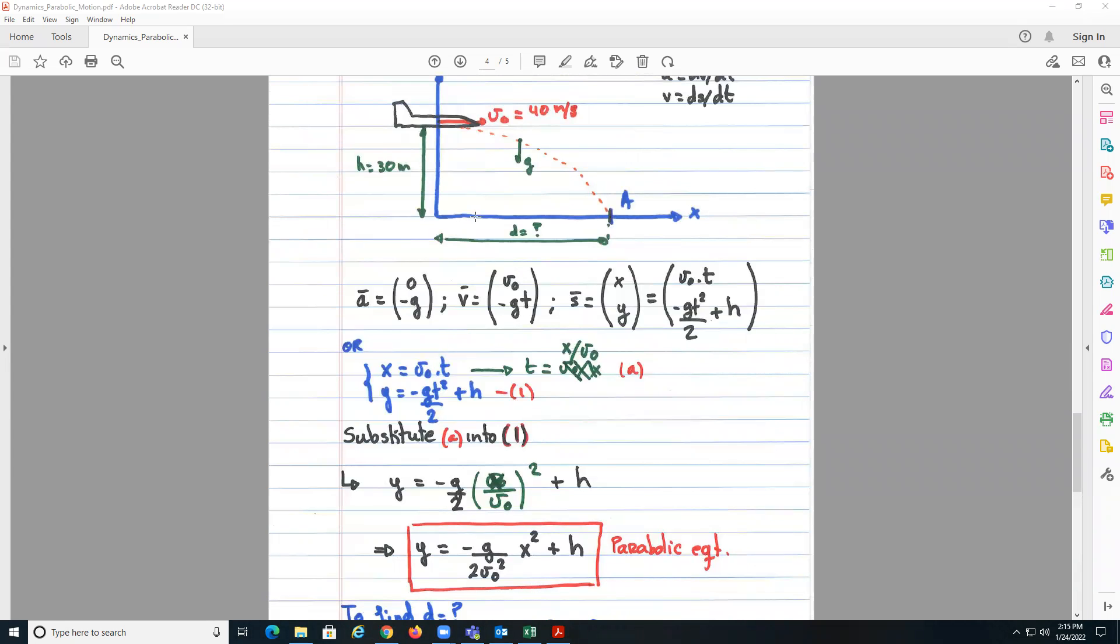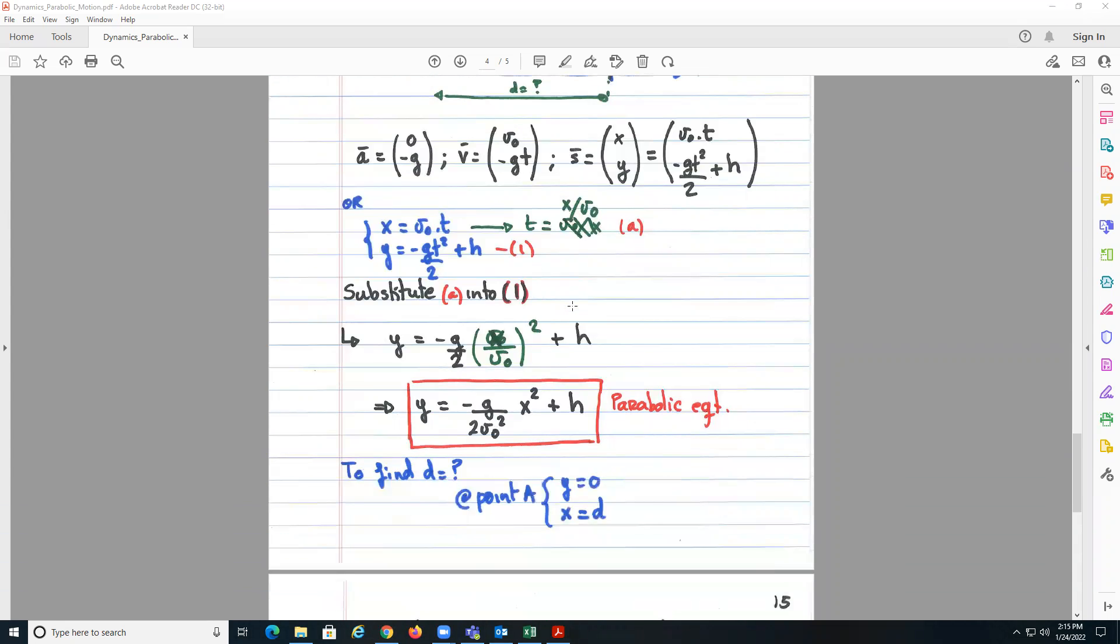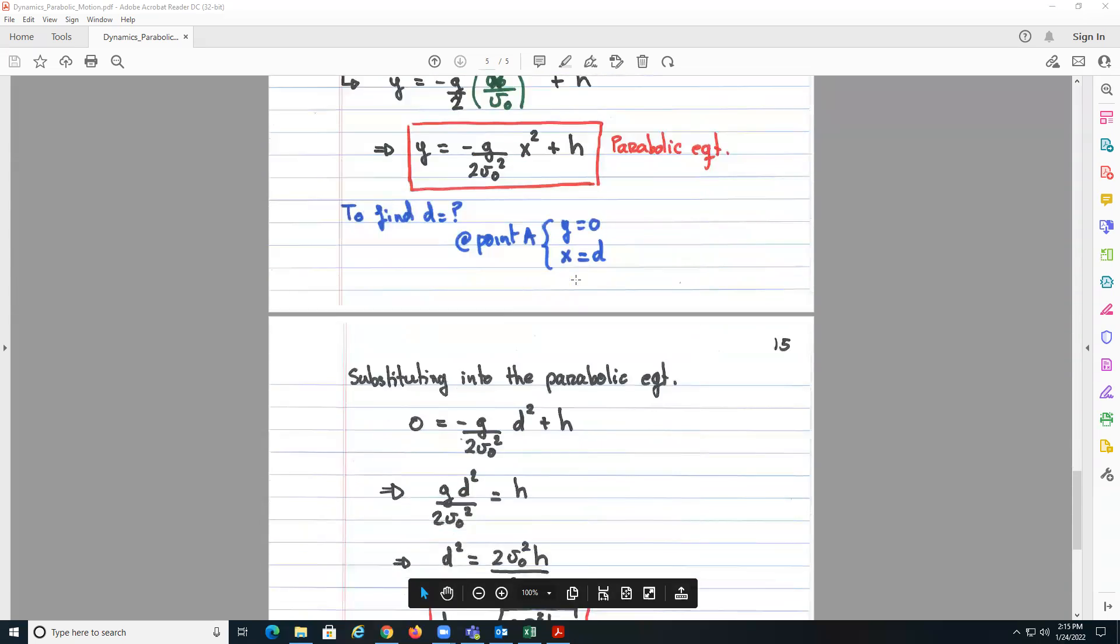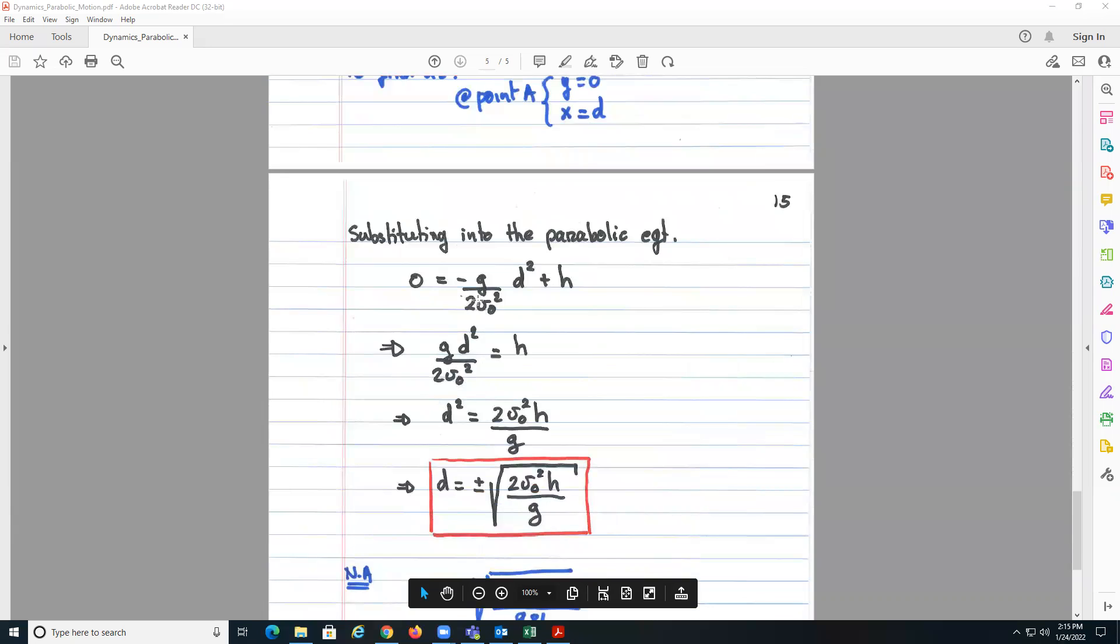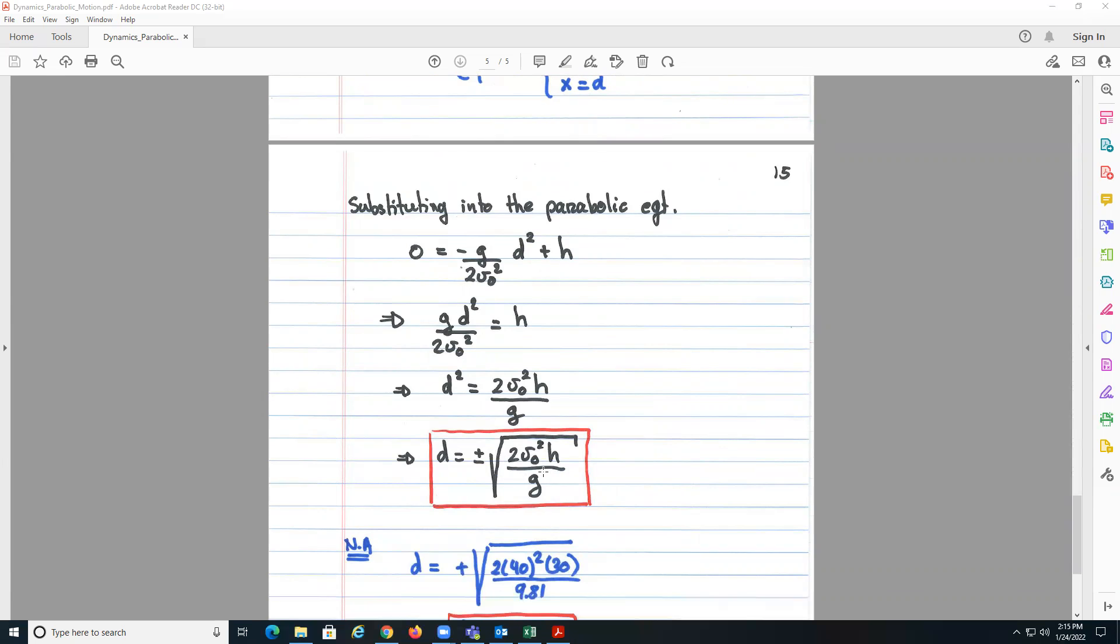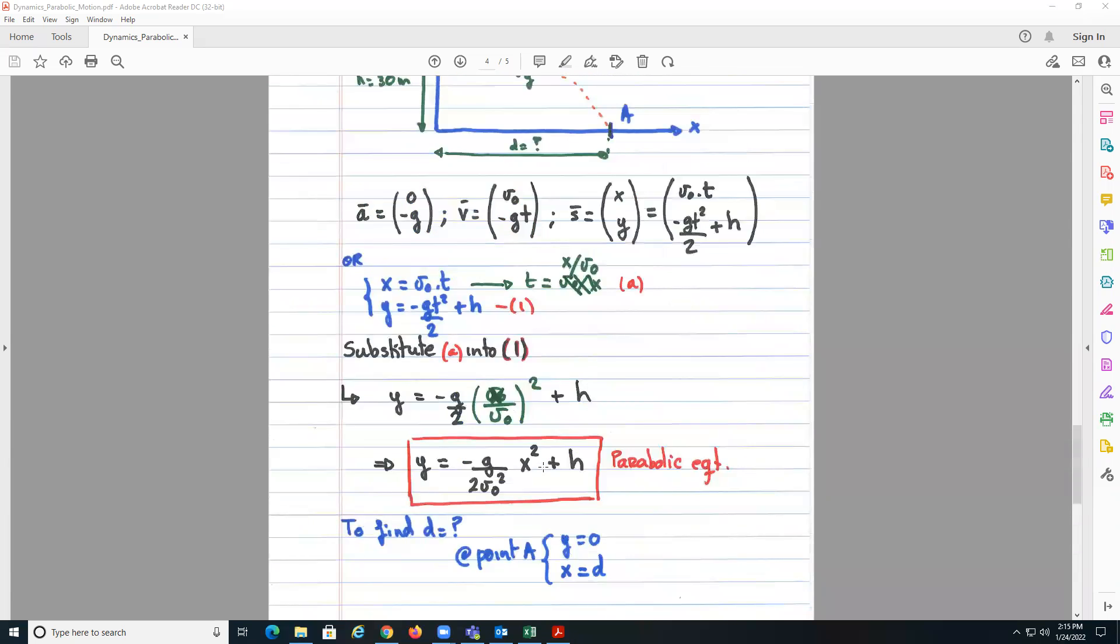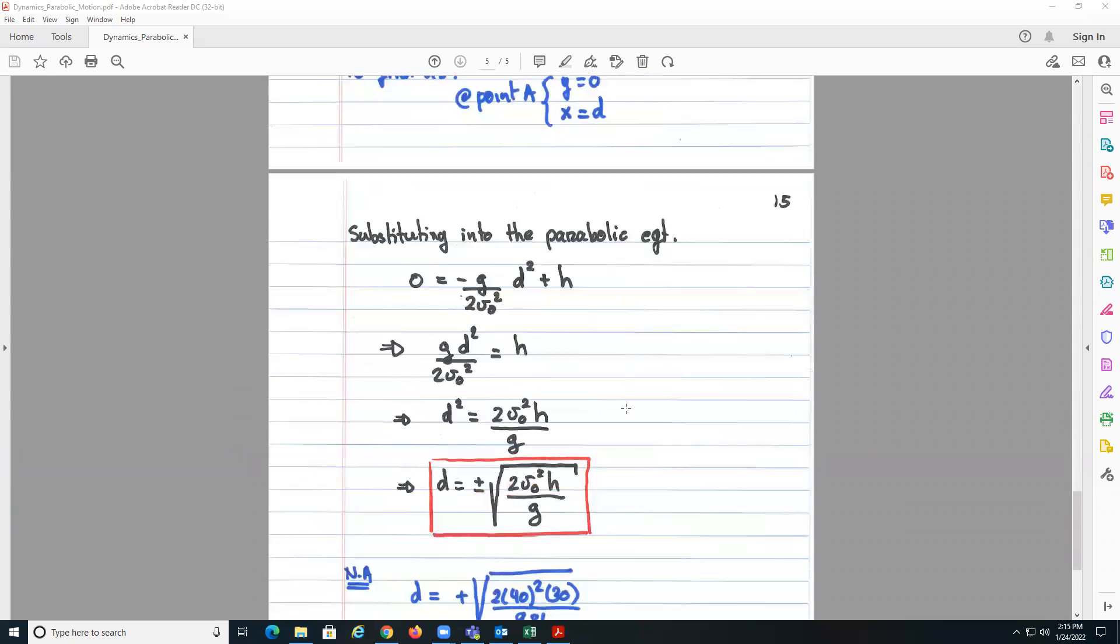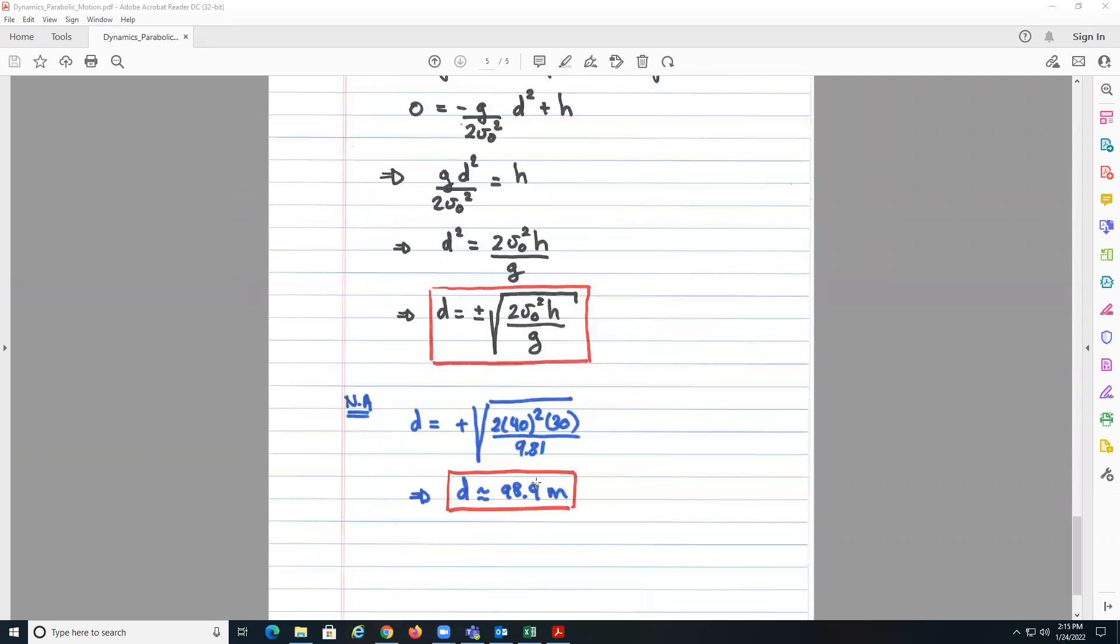Again, you know that at maximum range, y is equal to 0, so we know y equal to 0, x would be equal to d, the maximum one. So basically we solve, we do some algebra, and here we get plus minus square root of 2v naught squared h over g, but we know that physically the only one that makes sense is the positive value. So once you do the numerical substitution, you get about 98 or 99 meters. And I hope this short video will help you to understand the procedure to solve the parabolic equation. Thank you for your time.